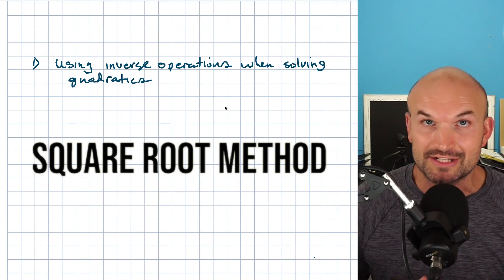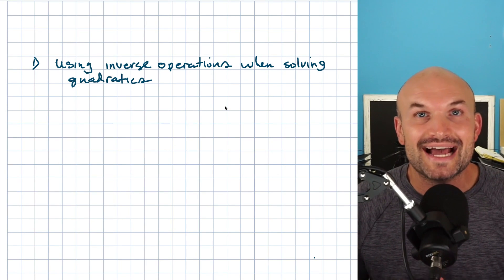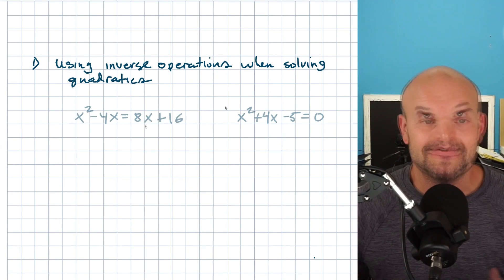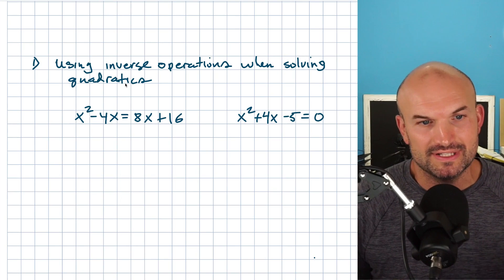However, once we have a quadratic with a quadratic term as well as a linear term, we cannot use inverse operations any longer. So to kind of give you a little bit of context to kind of see what happened, for instance, if we had this first equation,